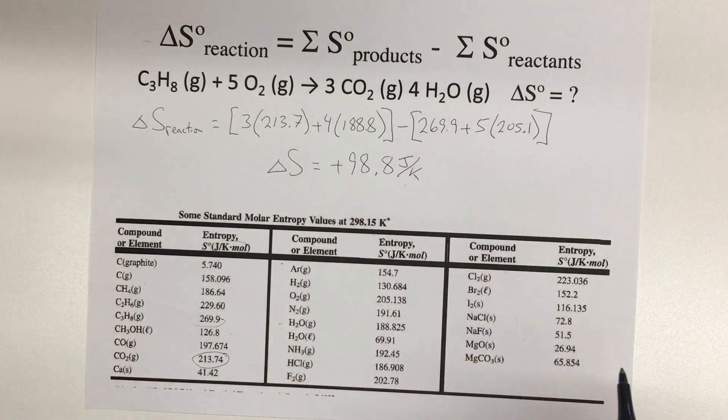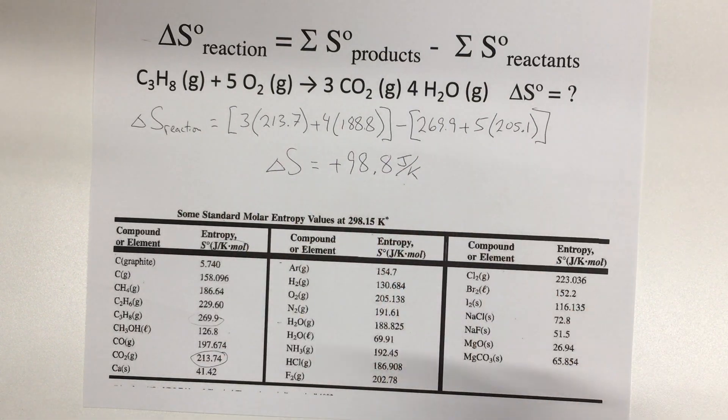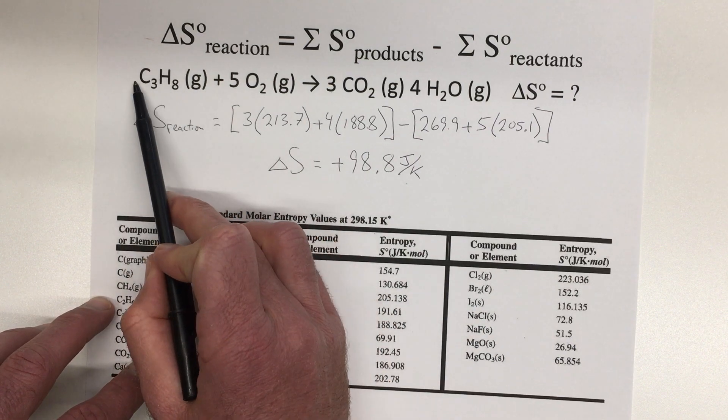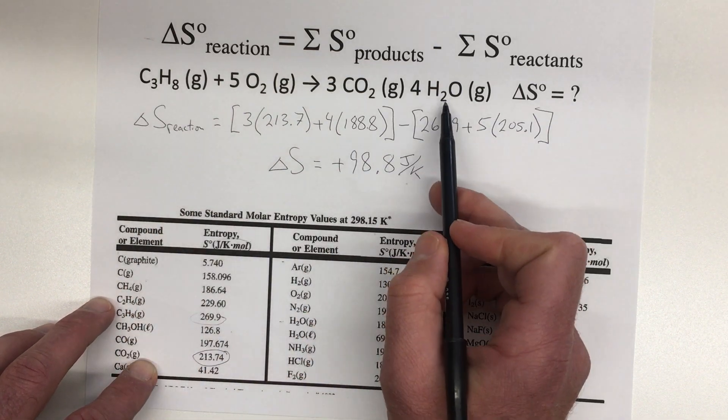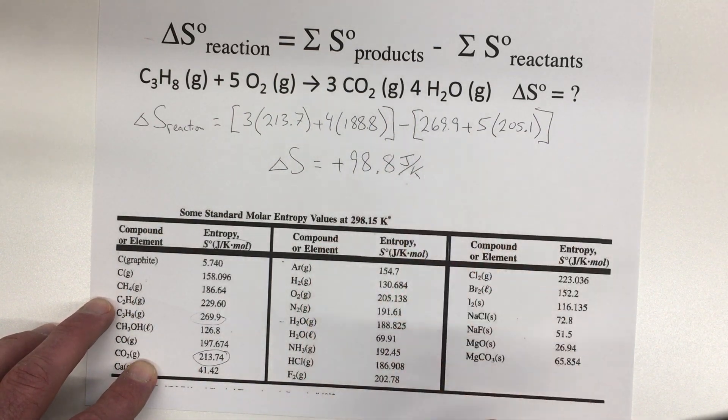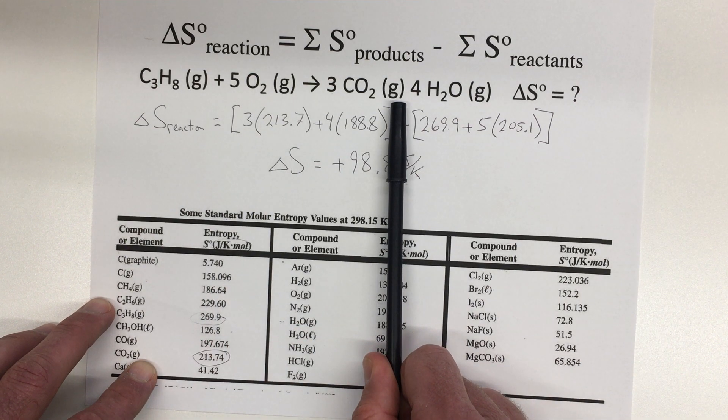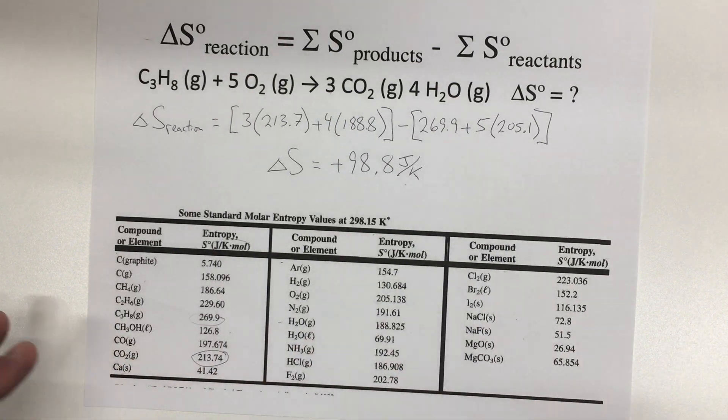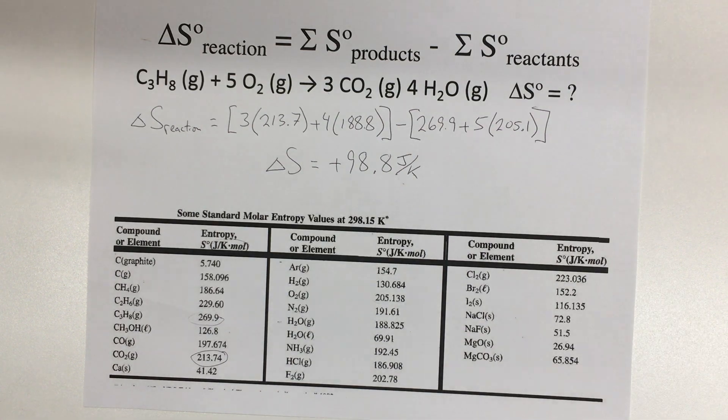It's positive. That means it's an increase in entropy as we go from the reactants to the products. We probably could have predicted that. So if we look at our reactants, we have one and five, so we have six moles of gas on this side. On our product side, we have three and four, so we have seven moles of gas. And typically when we see an increase in the number of moles of gas, that's an increase in entropy. And when we actually calculate it using the values, we confirm that it was a positive value, it was an increase in entropy.